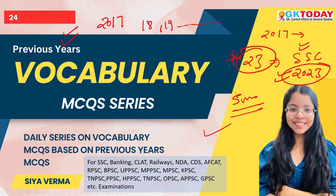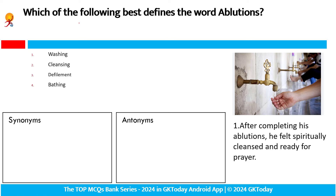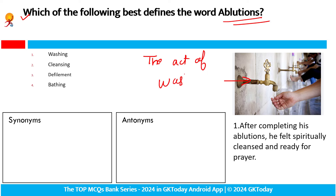We will start our session with the very first question. First one is: which of the following best defines the word 'ablution'? Ablution is exactly meaning — ablution is the act of washing oneself. Clearly, the act of washing oneself. In washing sense, we will use the word ablution. When prayer is the first process, ablution is the first process — before prayer.